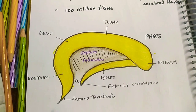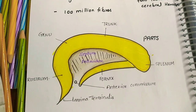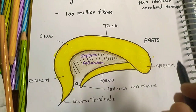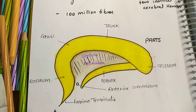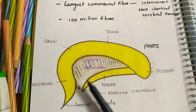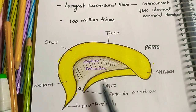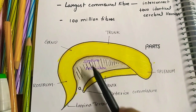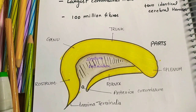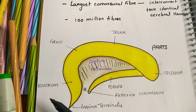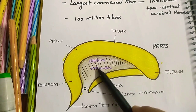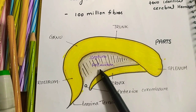In the sagittal section, the corpus callosum is seen as a C-shaped mass of white fibers on the medial surface of the cerebral hemispheres, forming the roof of the lateral ventricle. These two are connected by a small septum called the septum pellucidum.